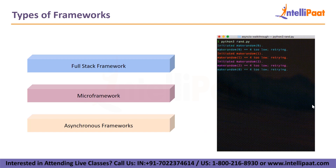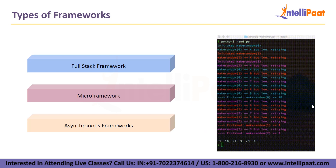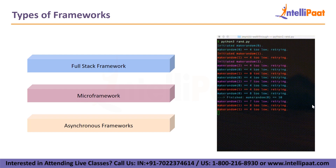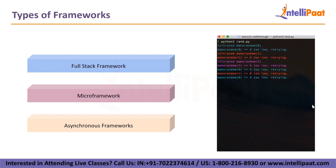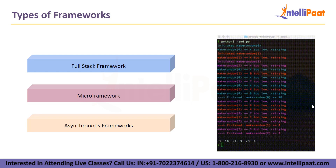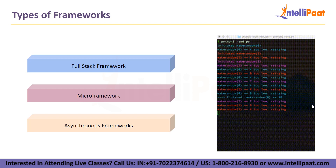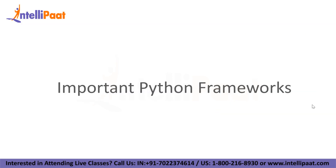Lastly, we have asynchronous frameworks. Although asynchronous programming is an old method of creating applications, its use in Python has increased in recent years. It is essentially parallel computation that works independently of the underlying app threads, and it is typically utilized when programmers need to merge many networks that already exist. AioHTTP and Sanic are reliable asynchronous frameworks that Python programmers can employ. With that, we will move on to our last agenda item: important Python frameworks.